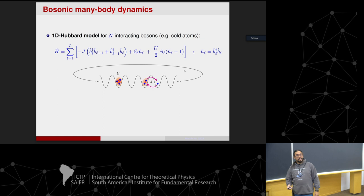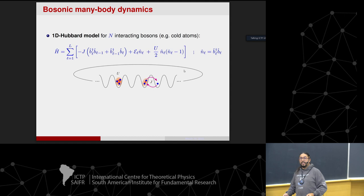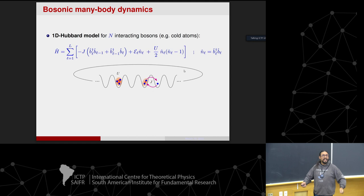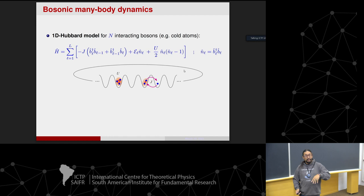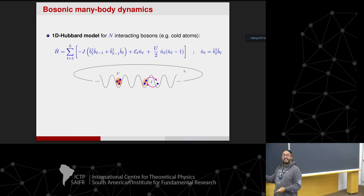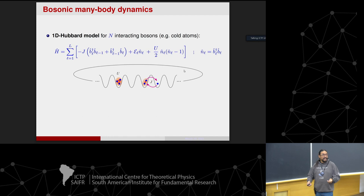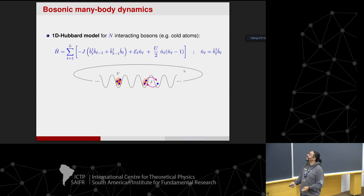The hopping term destroys a particle at one site and moves it to the neighboring site — you also need the opposite process for Hermiticity. This is a discrete version of kinetic energy: when you put the kinetic energy operator on a lattice, it produces exactly this kind of jumps. In condensed matter this is the tight-binding model for fermions.